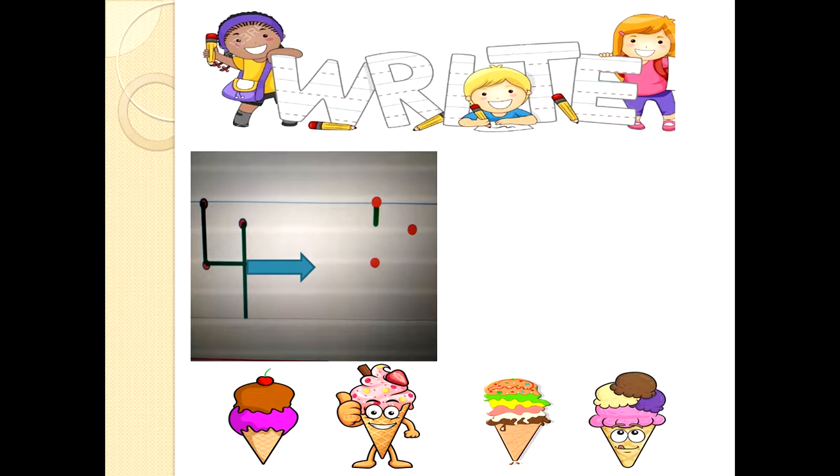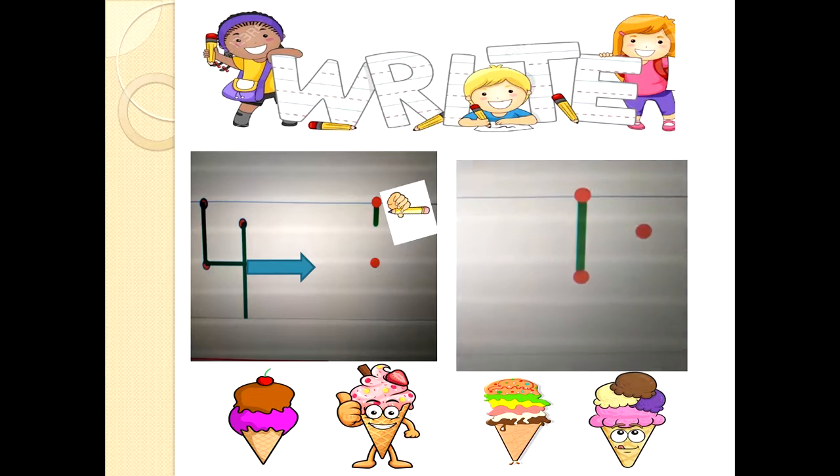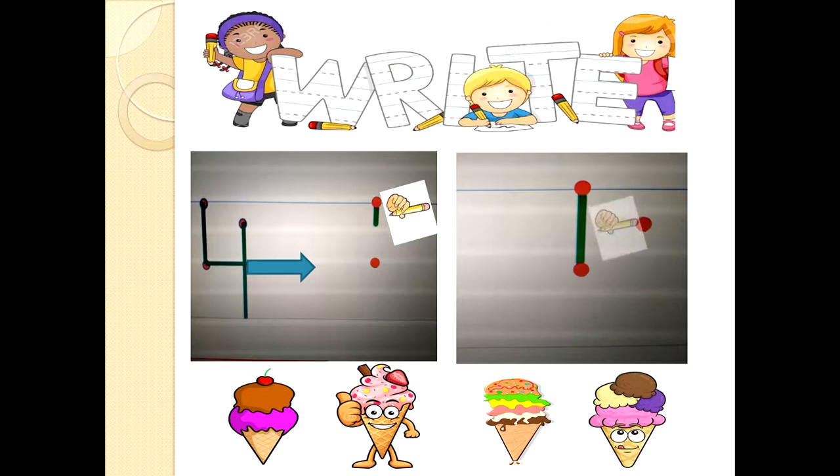Listen to me carefully students. In first step, first of all students make dots and use them like this, and then we draw a standing line from the first dot. Is it clear?